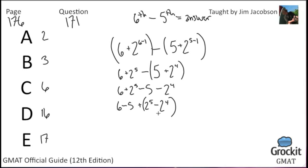And then once you have this quantity here, 2 to the 5th and 2 to the 4th have a common factor, namely 2 to the 4th. So we have 6 minus 5 plus 2 to the 4th times 2, because 2 to the 4th times 2 raises it to one more power. It becomes 2 to the 5th. So 2 to the 4th plus 1. So we have 1 plus 2 to the 4th times 1. So 2 to the 4th plus 1. 2 to the 4th is 16, so 16 plus 1 equals 17. Answer choice E.